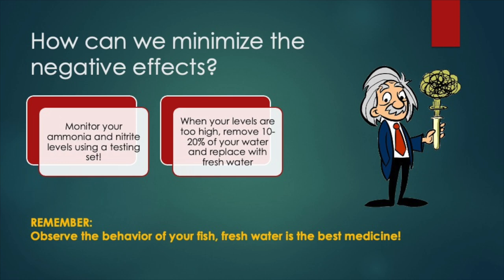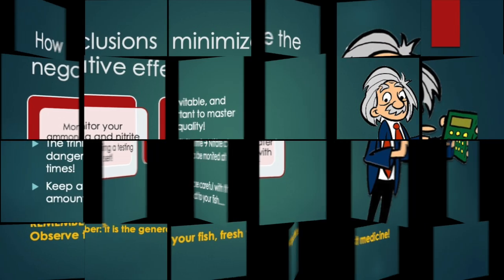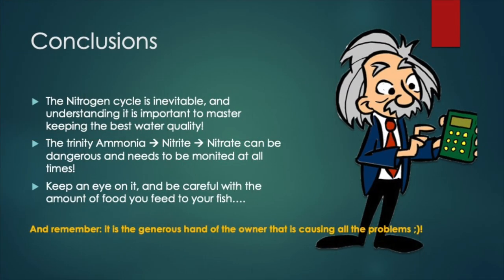Guiding your filtration system to the stage where there are enough bacteria to cope with the amount of toxic waste is essential. After that, just measure the amount of ammonia and nitrite regularly when you are doing maintenance, and you are good to go. Keeping healthy fish is equal to keeping healthy water — let this sink in. It all starts with good water management, and understanding and mastering the nitrogen cycle is a key element in that.